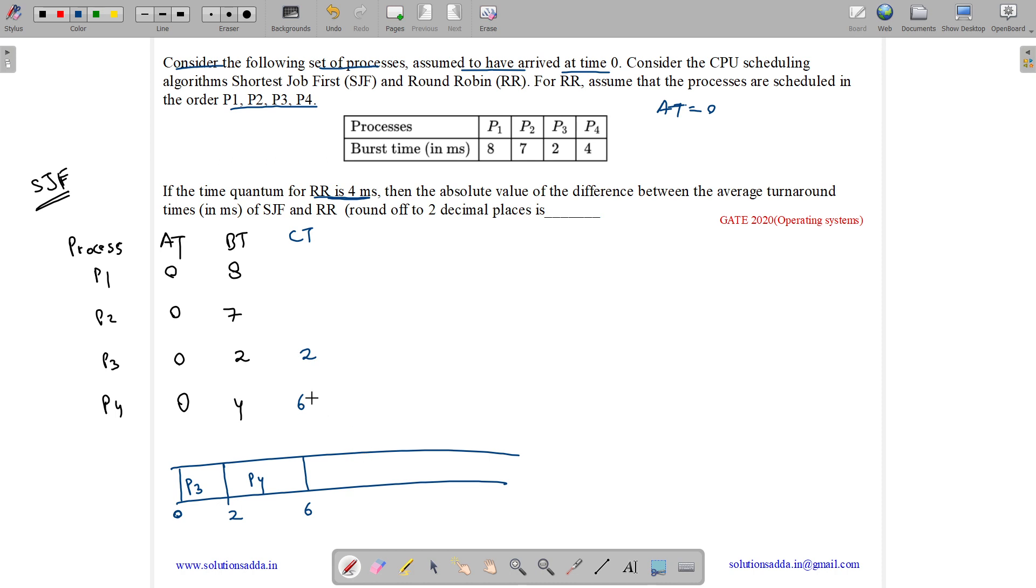Then we have only P1 and P2 remaining. So P2 is less, so P2 gets scheduled. 6 plus 7 is 13. Then P1 gets scheduled. 13 plus 8 is 21. So P1 completes at 21, P2 completes at 13. So what is average turnaround time?